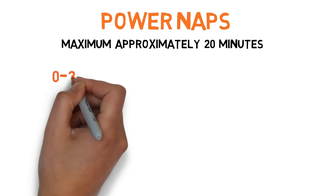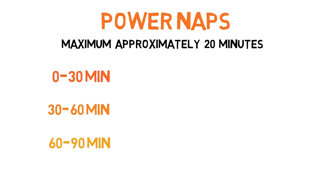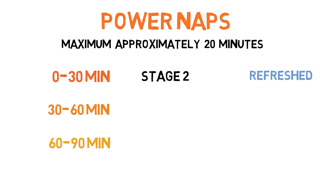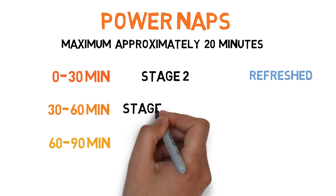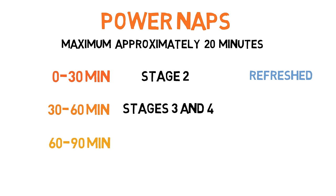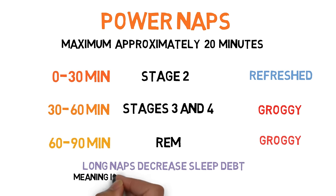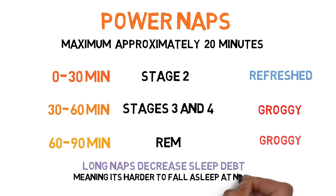This is long enough to get you into stage 2 sleep which helps boost your memory and creativity. Longer naps are subject to increased sleep inertia, meaning it sucks waking up. If you nap for 30 to 60 minutes, you will enter slow-wave sleep, which is good for decision making but you will wake up groggy. REM sleep occurs at 60 to 90 minutes but again, you will wake up groggy, therefore shorter power naps are your best bet. Taking naps that are too long won't only leave you feeling groggy but will also decrease the sleep debt necessary for sleep onset. That means it will be more difficult for you to fall asleep at night.